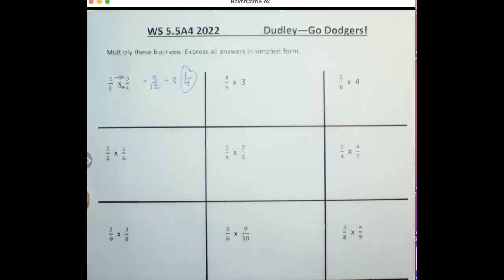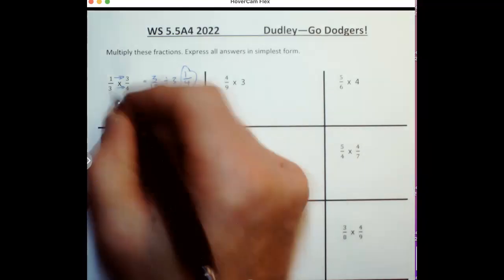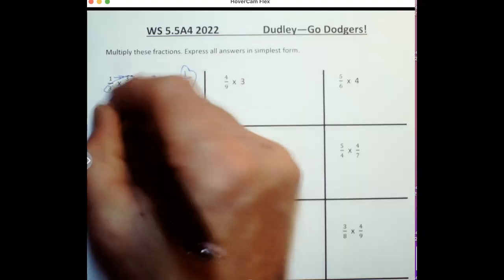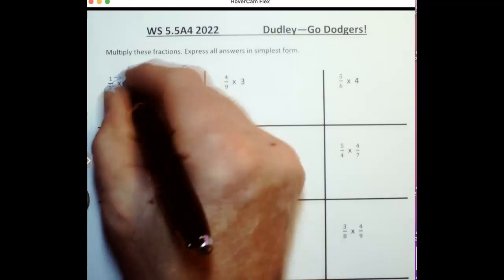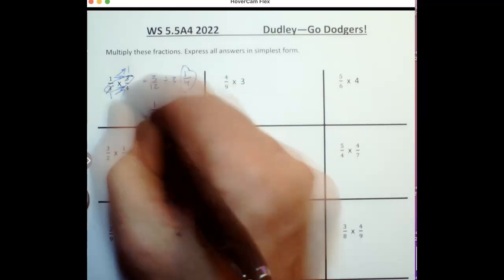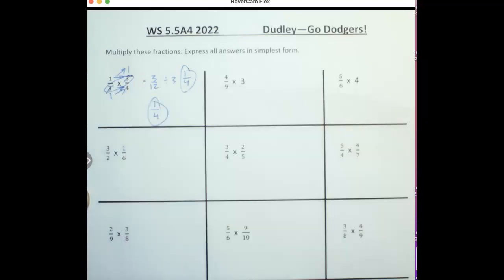I like to do it slightly different. I like to cross-reduce. I look here and I reduce before I multiply. 3 divided by 3 is 1, 3 divided by 3 is 1, 1 times 1 is 1, 1 times 4 is 4, and then I got my answer done right away. There's no reducing. I'm lazy, I like to cross-reduce.